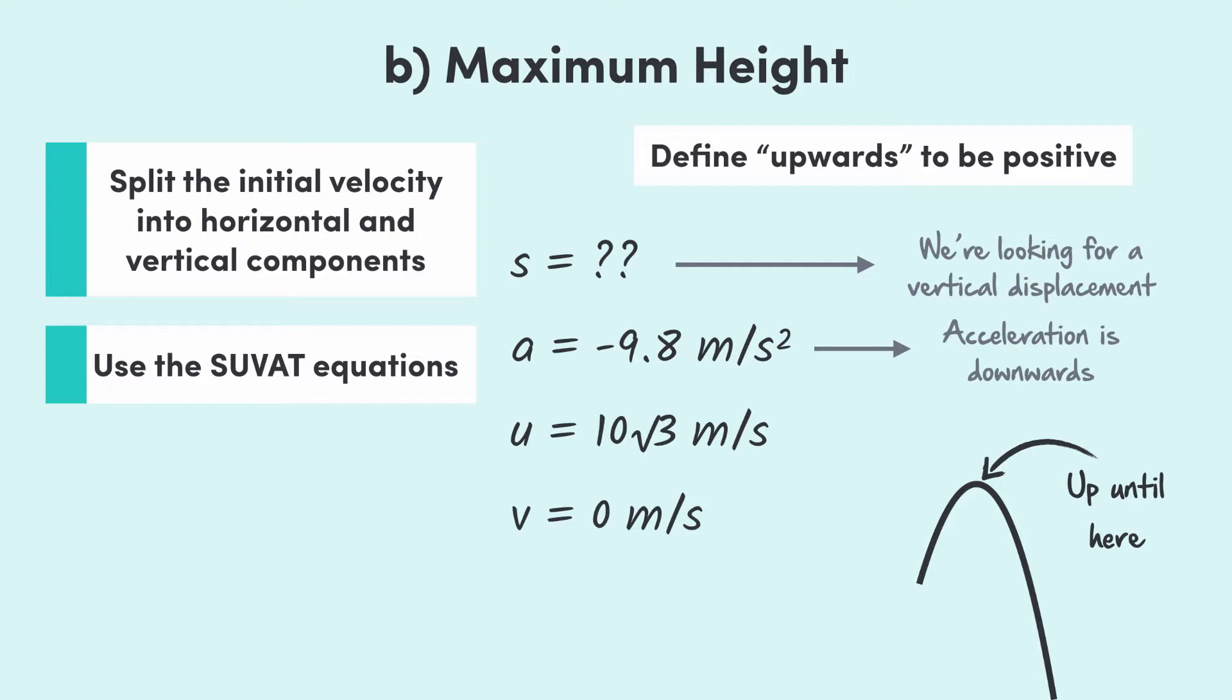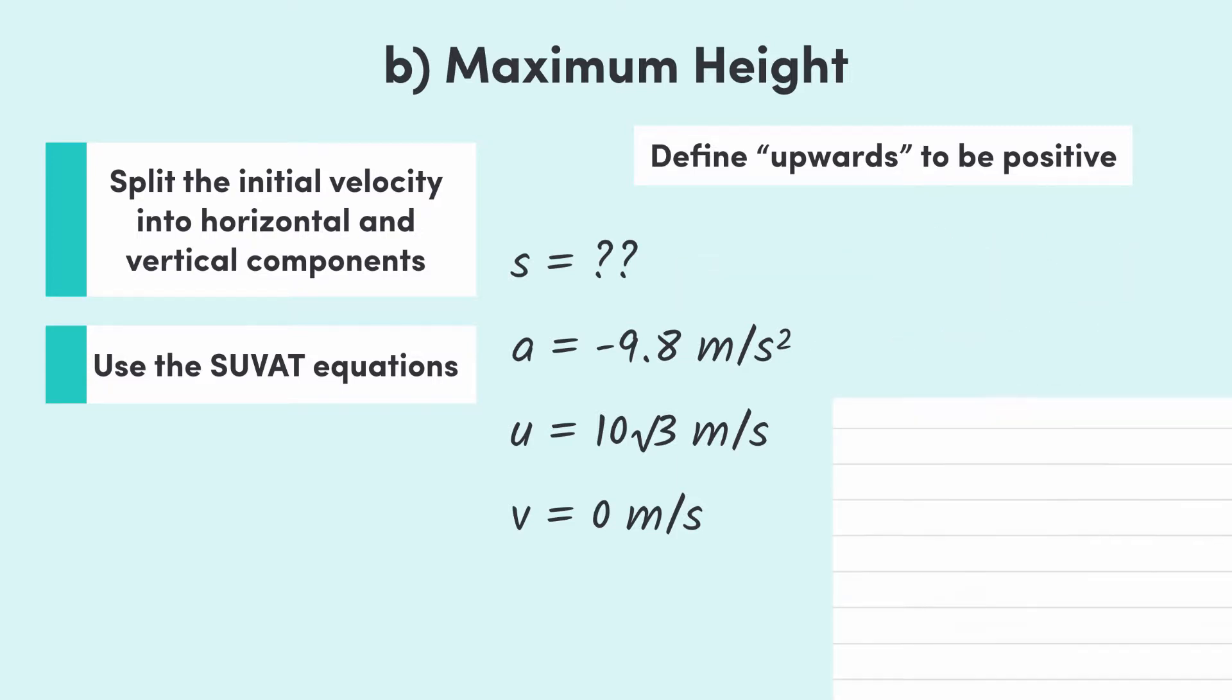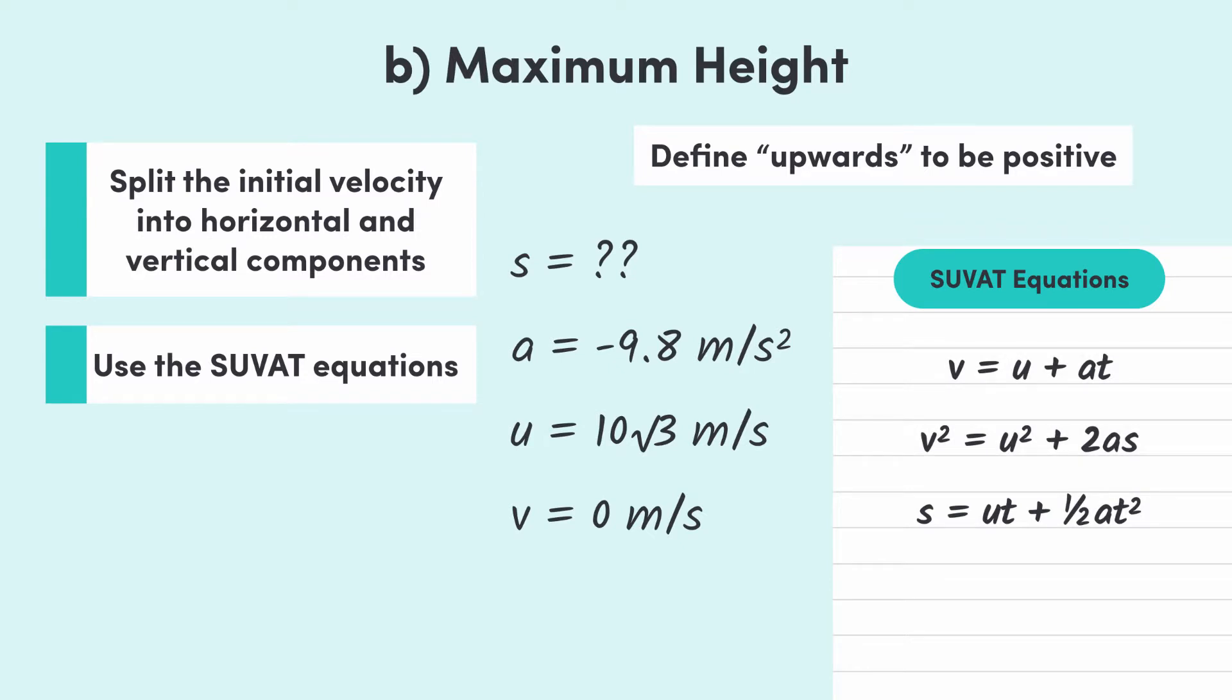So, since we have v, u and a, and we're looking for s, we use the equation v squared equals u squared plus 2as. Subbing the values, we get 0 equals 300 minus 19.6s, which gives us s equals 15.3.